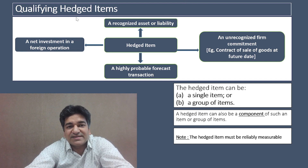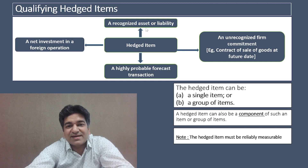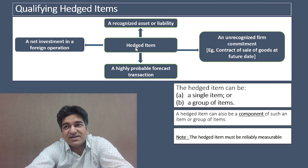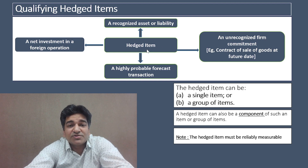Ind AS 109 has given a list of qualifying hedged items. Number one: a recognized asset or a recognized liability can be a hedged item. Number two: Ind AS 109 says an unrecognized firm commitment can be an eligible hedged item. Let us first discuss what exactly is an unrecognized firm commitment.